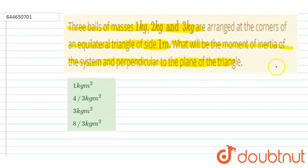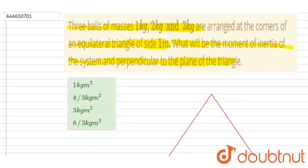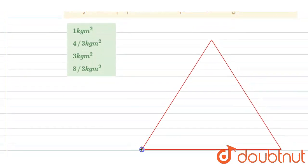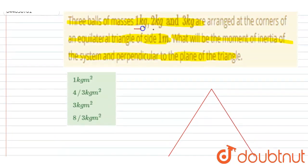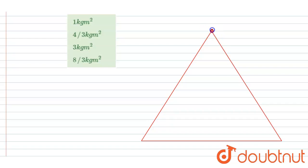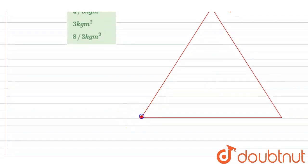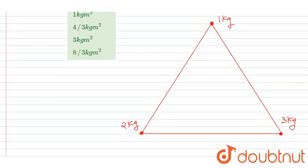We want the moment of inertia of the system about the center of the equilateral triangle and perpendicular to the plane of the triangle. So if I make a triangle like this, at each corner a ball of mass 1kg, 2kg and 3kg are arranged. I will write here 2kg and 3kg, and we want the moment of inertia about the center O.